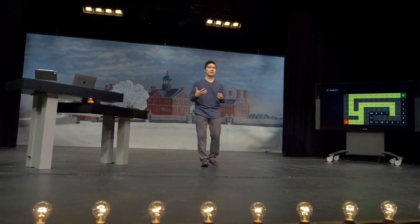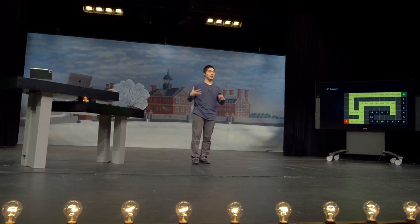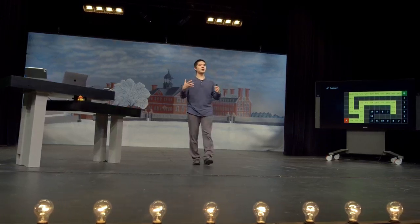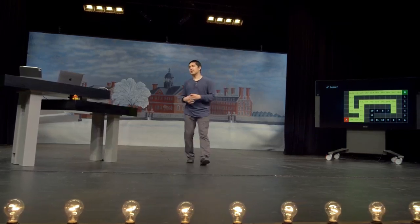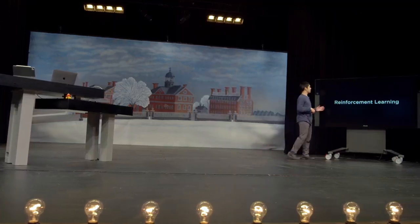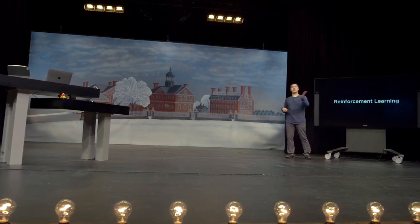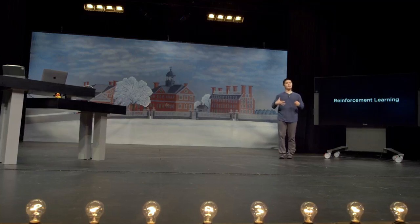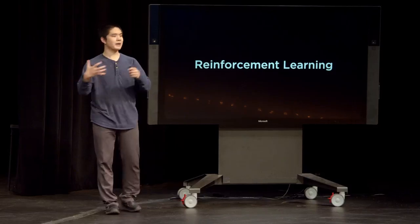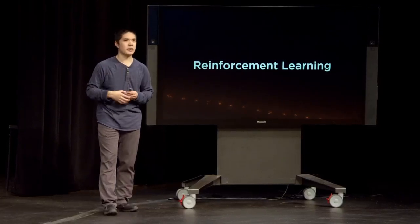What I want to move on to now is less about coming up with algorithms that let the AI figure out exactly what to do right away, and more about a type of artificial intelligence you've probably heard of: machine learning. Machine learning is all about trying to get our AI to learn — learn from data or from experience, in much the same way that humans learn from looking at our environment, from our surroundings, from our experiences.